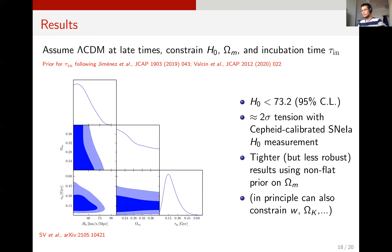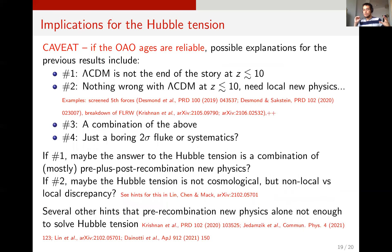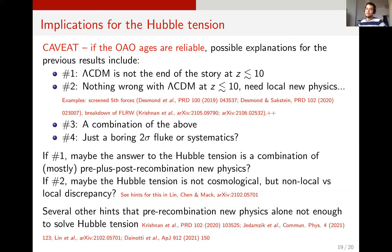So what are the implications? If you believe the ages of galaxies and quasars, possible explanations are: it could be that Lambda CDM is not the end of the story at low redshift — you might need new physics, perhaps related to dark energy. It might be that there's nothing wrong with Lambda CDM at late times but you need local new physics, or a combination of the two. Or it could of course also be a fluke or systematics.